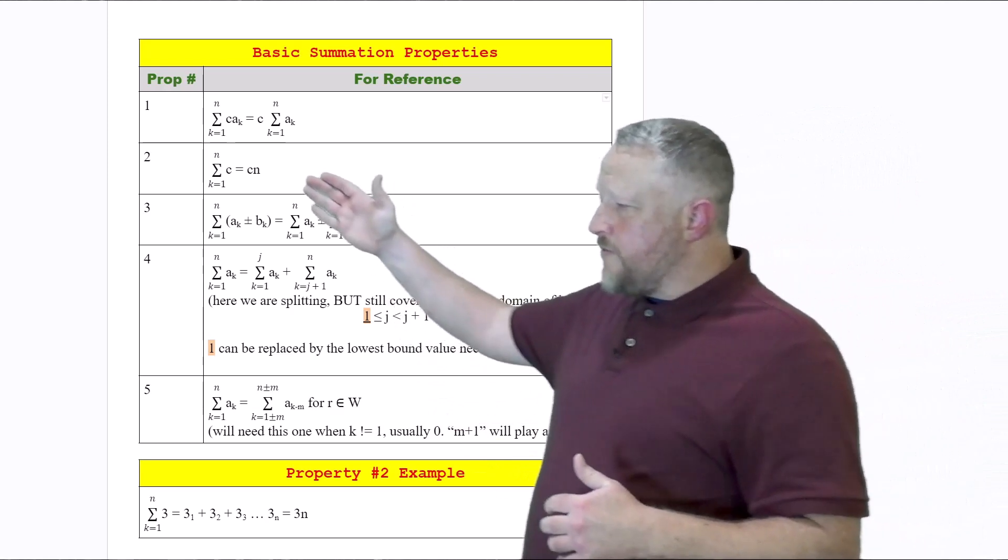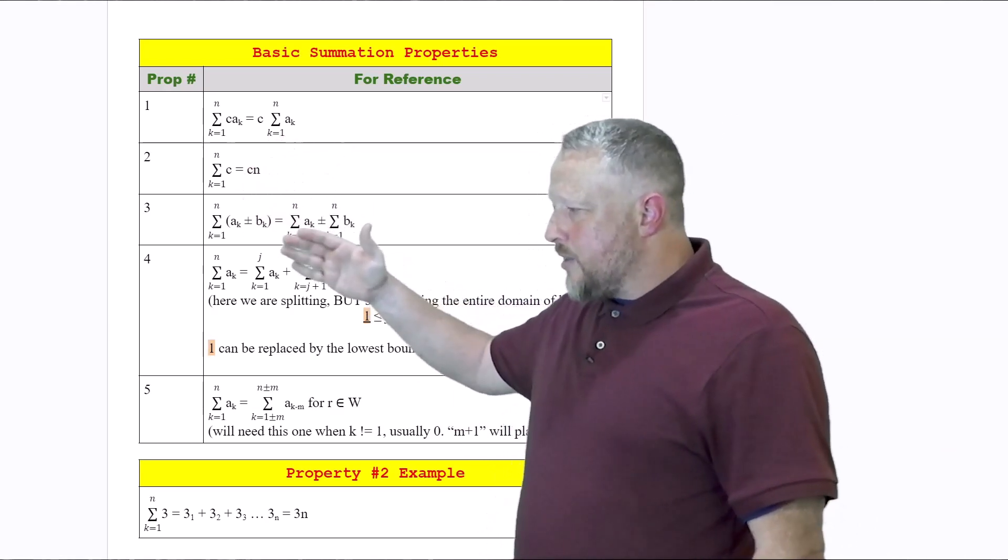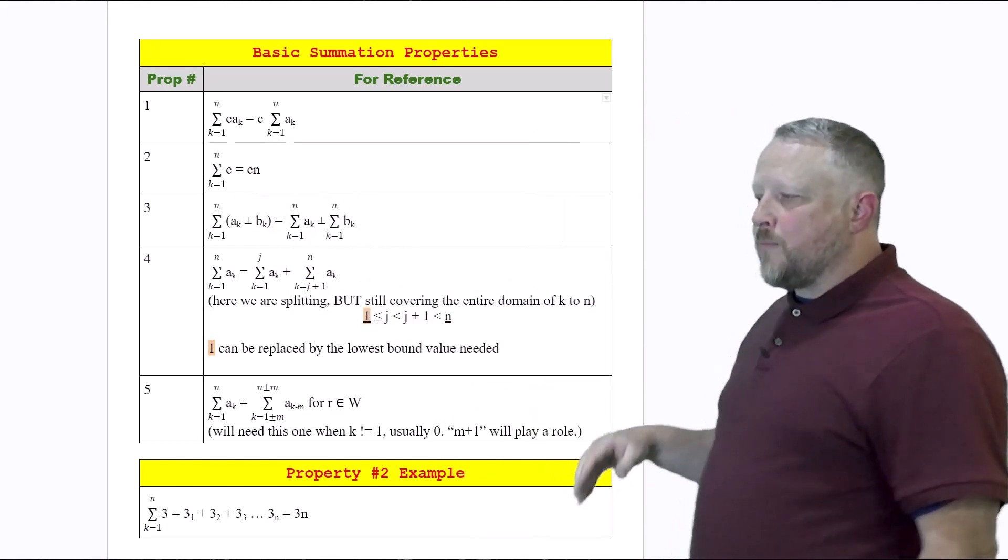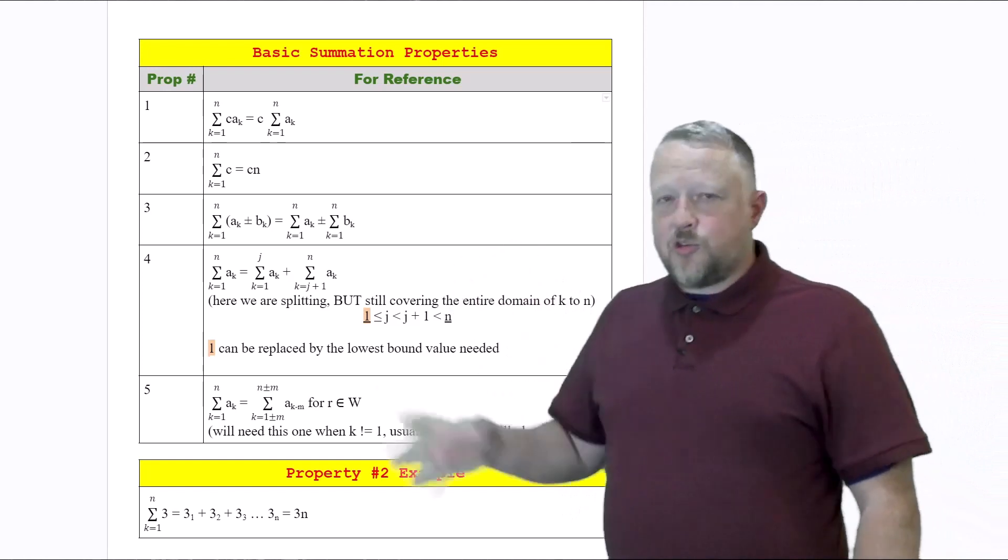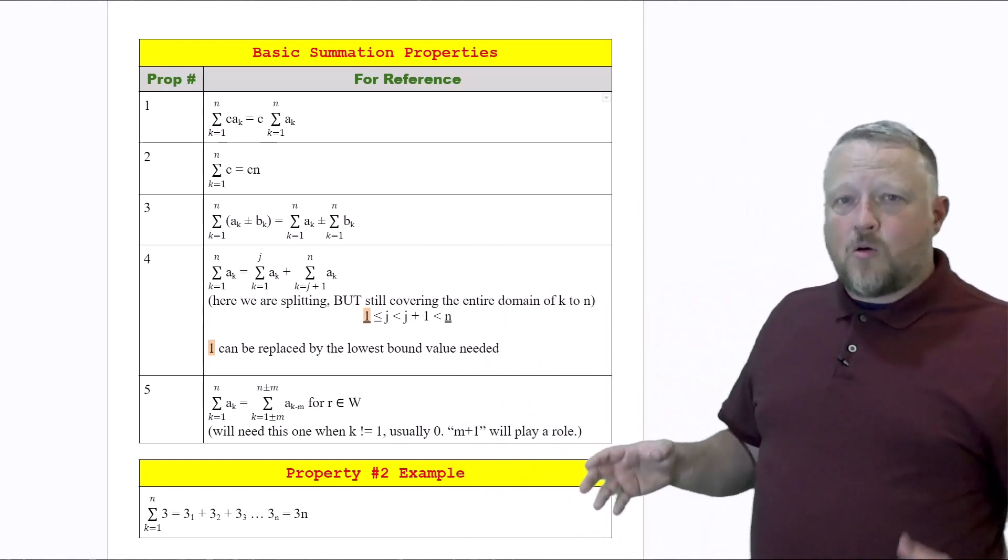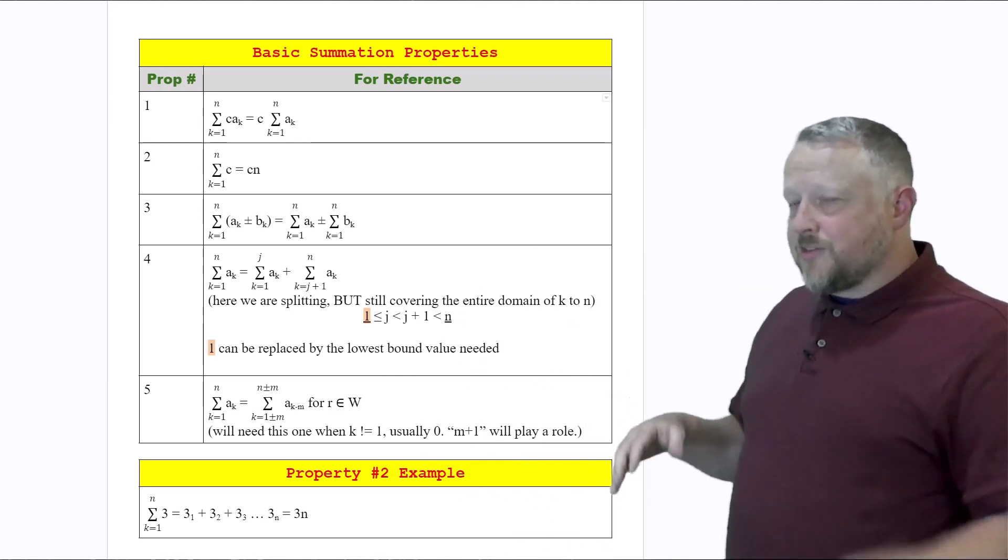Notice all the values that we have here—K or N or J, whatever—they all start at one. But what if we wanted something a little bit different? We want to start it at two or zero? Then we need to change some things around here.